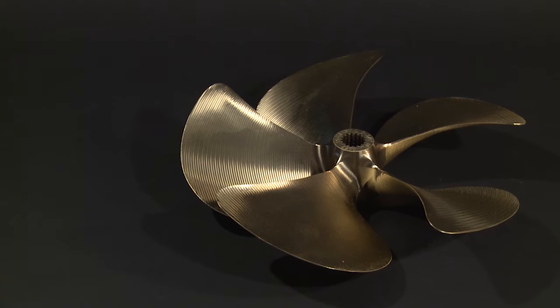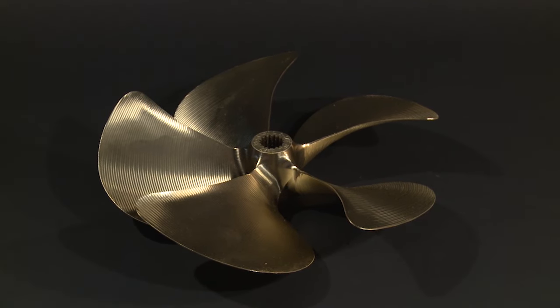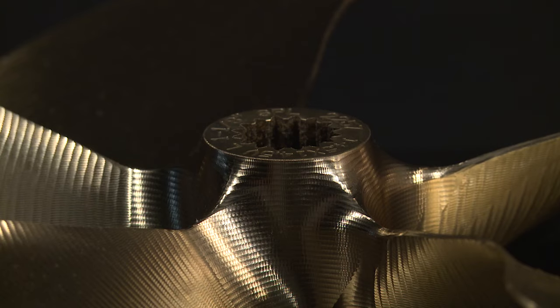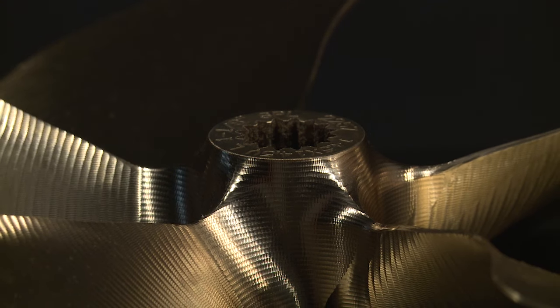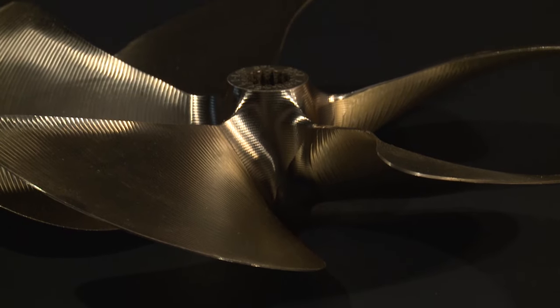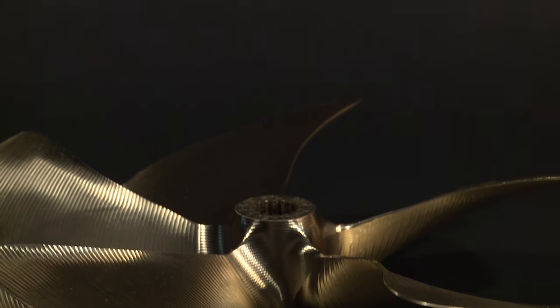Consistent with Acme's high standards is ski boat propeller model SPL 2257. This 14 and 1 half by 14 and 1 half prop offers a bore diameter of 1 and 1 eighth and a left rotation.